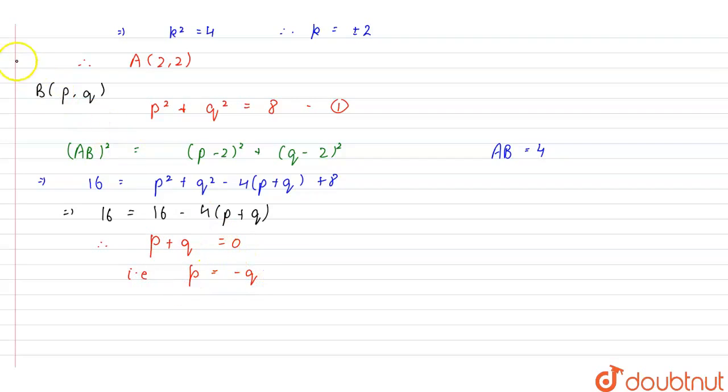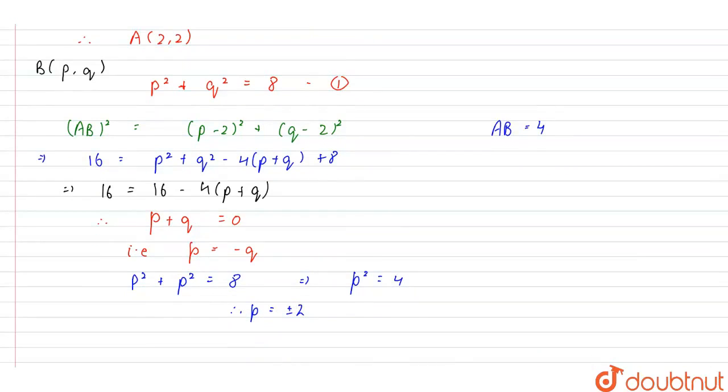So, using p equals minus q in equation 1, we will get p² plus p² is equal to 8. So, this gives us p² is equal to 4. Therefore, p will be equal to plus minus 2. So, for this, we will get two points.